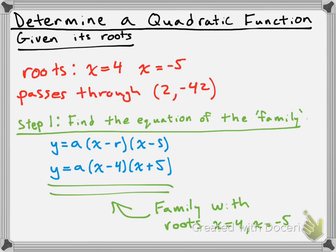Notice that I don't know what 'a' is, and that makes sense because 'a' tells us how fat or skinny the parabola is going to be and whether it opens up or down. We don't know those things yet — we know it has roots at x equals 4 and x equals negative 5, but there are all sorts of quadratic functions with those roots: some open up, some open down, some are skinny, some are fat. That's why we don't know 'a'.